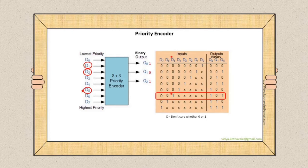For example, if the 3 inputs D1, D2, D5 appear simultaneously at the input of the priority encoder, then D5 has the highest priority and its output binary code 101 will be obtained at the output of the encoder.